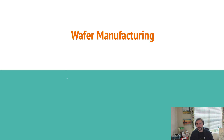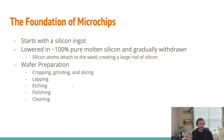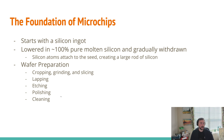Let's start out with wafer manufacturing. It all starts with a silicon ingot. We take the silicon ingot and lower it into a crucible filled with roughly 100% pure molten silicon. We gradually withdraw it, and as both are rotating, the silicon atoms attach to the seed ingot and we create this large rod of silicon. We then go through wafer preparation steps: cropping, grinding, and slicing to chop up this rod of silicon, and then lapping, etching, polishing, and cleaning to remove any damaged areas, make sure they're completely flat, and ensure they don't have any impurities on their surface. We're basically making the foundation for our future integrated circuits.